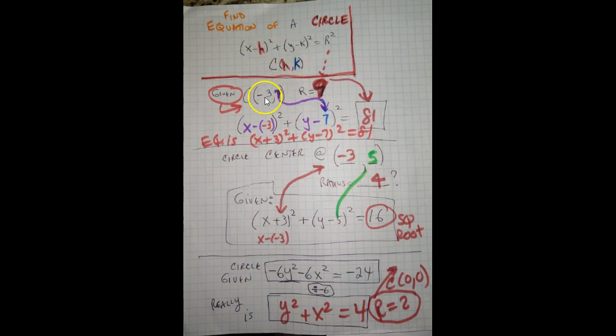So if our center was negative 3, 7, the negative 3 would go where the h is, the 7 would go where the k is, and we'd have x minus negative, which becomes x plus y minus 7. And then the radius, if that was 9, we'd square that to get 81. So there's the equation.